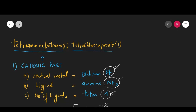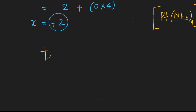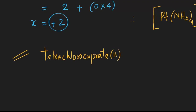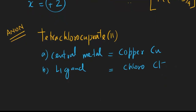Now let's go to the anionic part, which is tetrachlorocuprate. For tetrachlorocuprate 2, the central metal is copper. The ligands are chloro — chloro is Cl⁻ — and the chloro ligand appears four times, as indicated by the numerical prefix tetra, which means four.